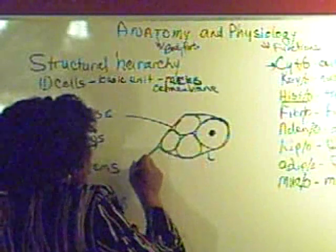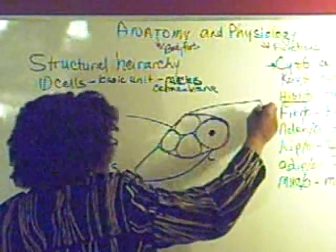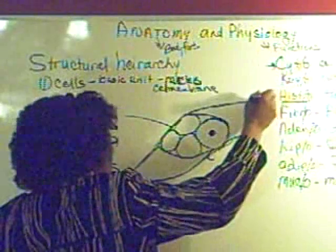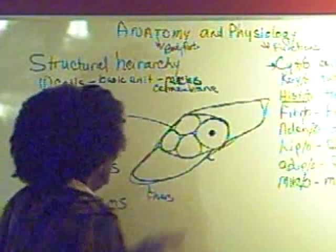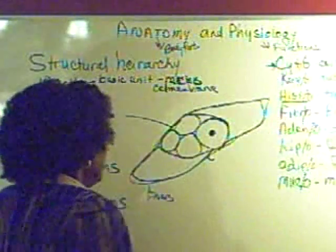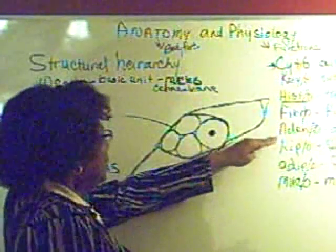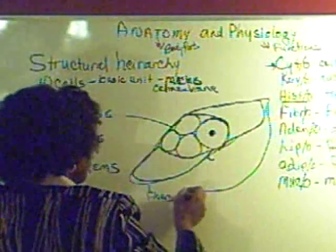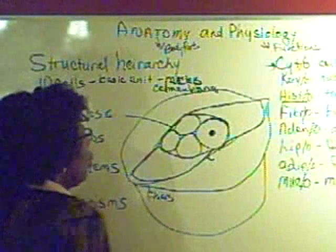When you get several tissues together, and these are tissues that pretty much perform the same function, you have fibers. And fibers, the medical term is fibro, which means fibers. Fibers are a group of tissues that are grouped together. Adeno is gland and a group of fibers make what are called glands. Glands are also organs.